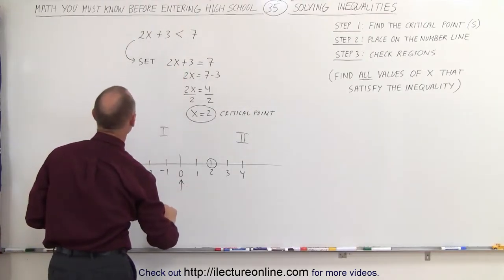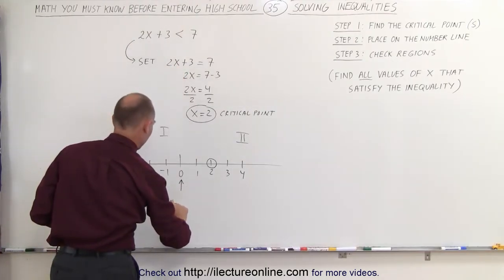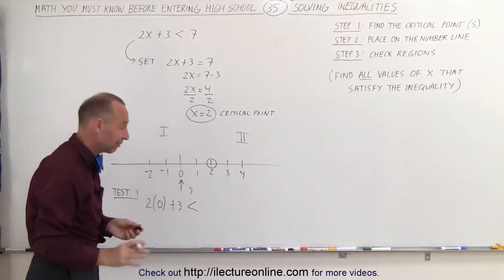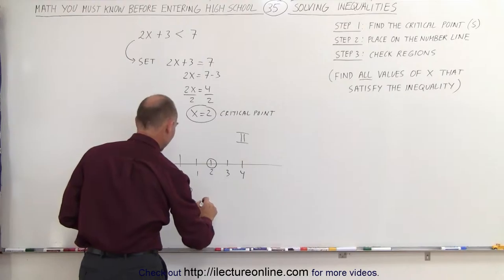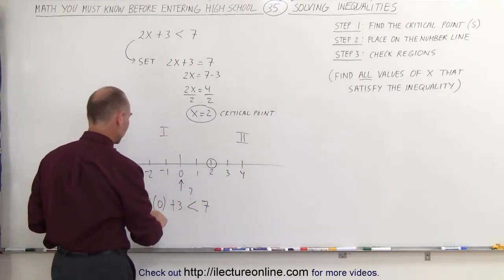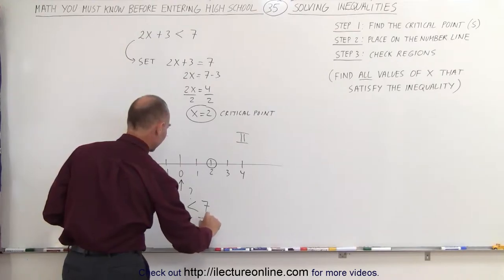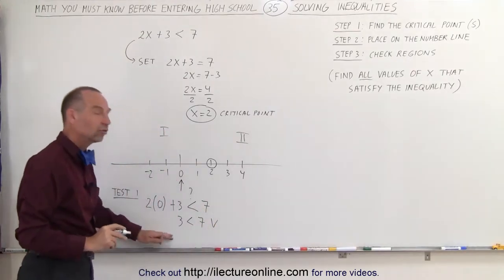So 2 times 0 plus 3, is that less than 7? Well, let's see. 2 times 0 is 0 plus 3 is indeed less than 7. That checks. So this is a true statement.